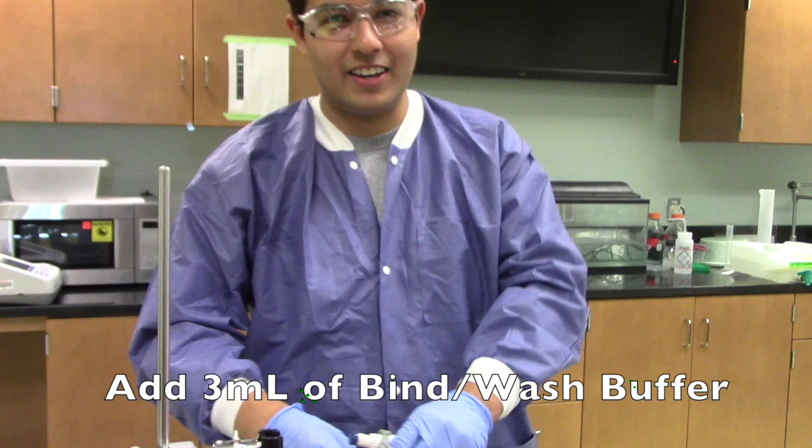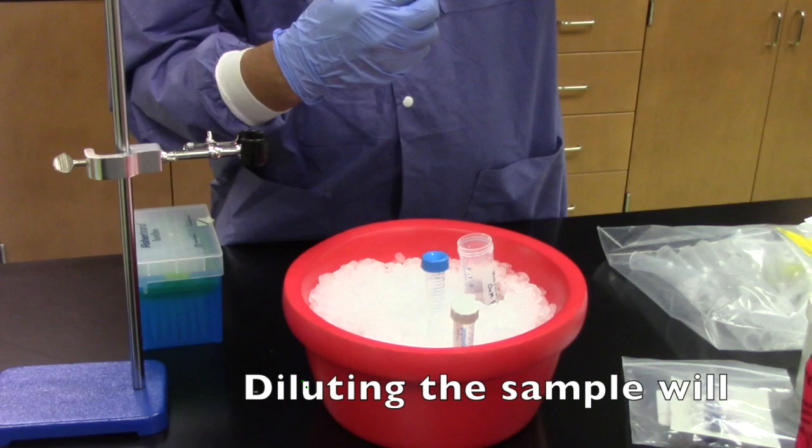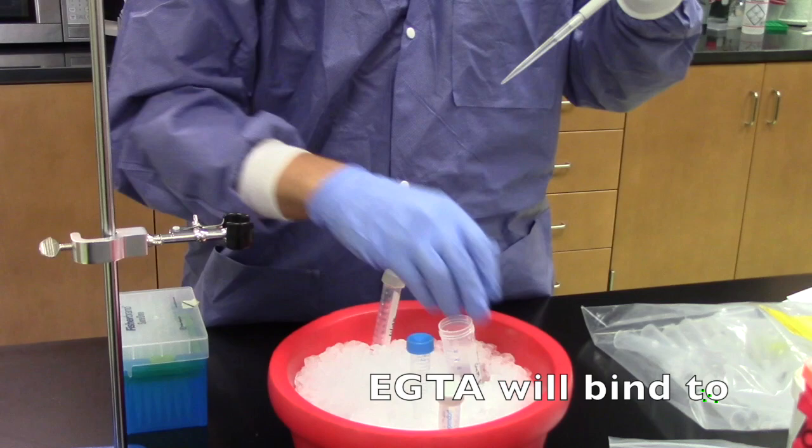Add 3 milliliters of bind wash buffer with 10 millimolar EGTA. Diluting the sample will increase the sample binding to the column. EGTA will bind to any present calcium that could otherwise bind to GST Campari.